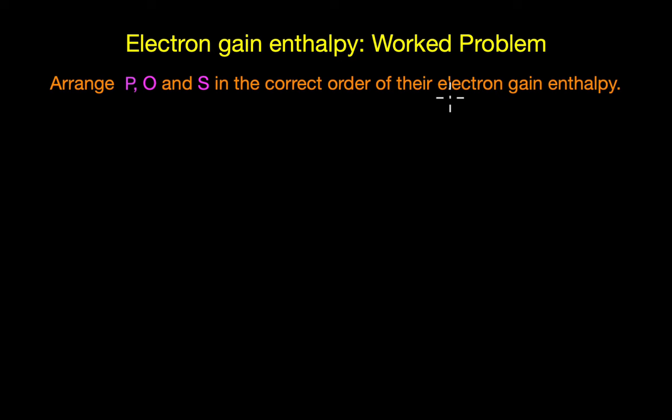To quickly take a recap, electron gain enthalpy refers to the energy change that occurs when a neutral atom in gaseous state acquires an electron to form a negatively charged ion. Basically, it helps us measure how easily an electron can be added to a neutral atom.